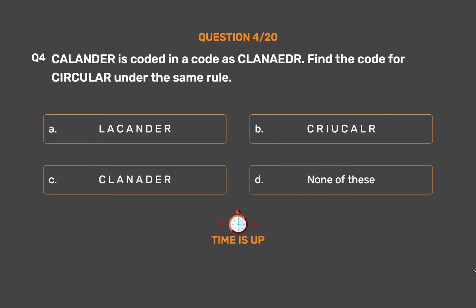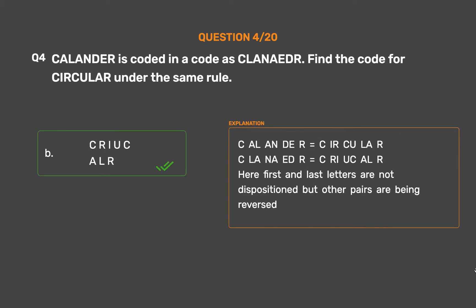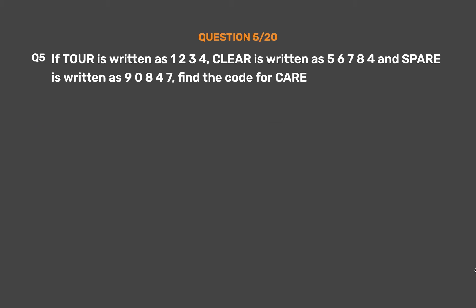The correct answer is Option B: CRIUCALR. In 'CALENDAR' → 'CLANAAR': the first and last letters are not repositioned, but the other letters are reversed in pairs. Applying the same rule to 'CIRCULAR' gives CRIUCALR.